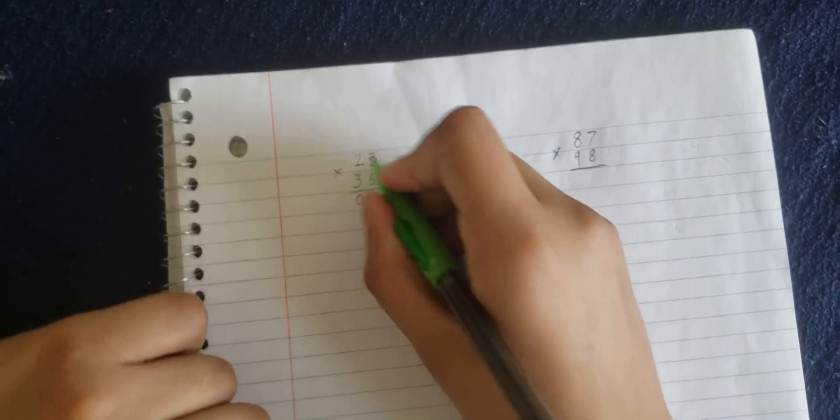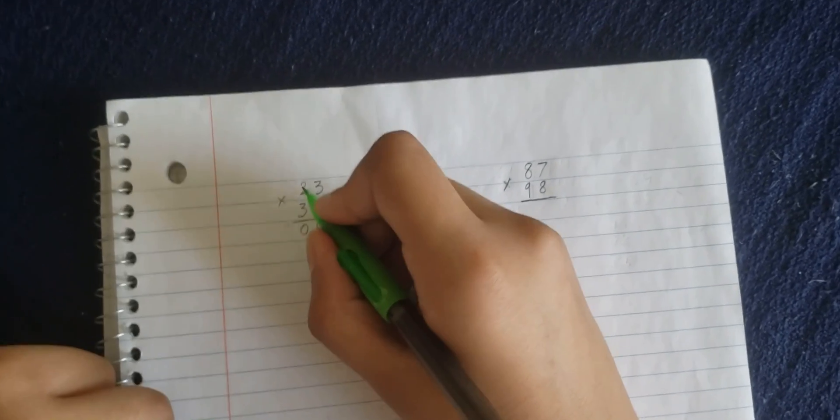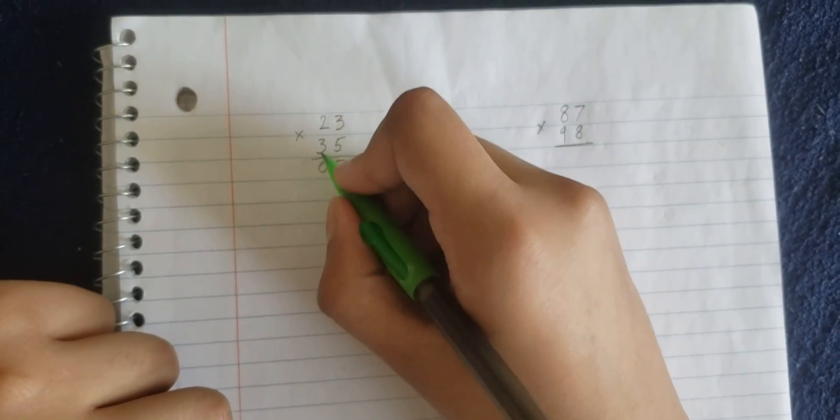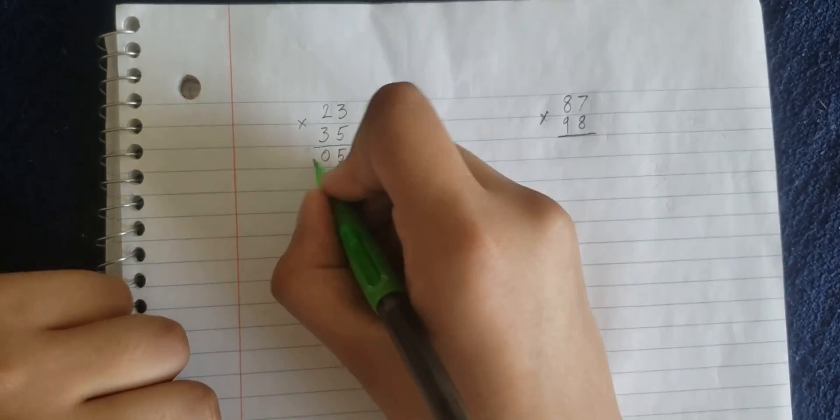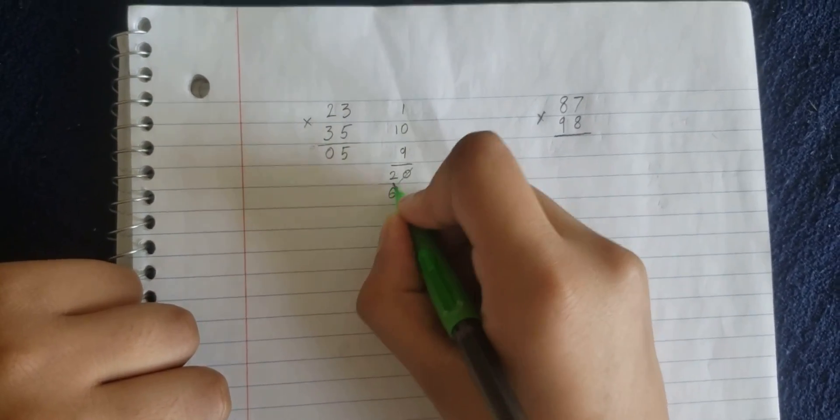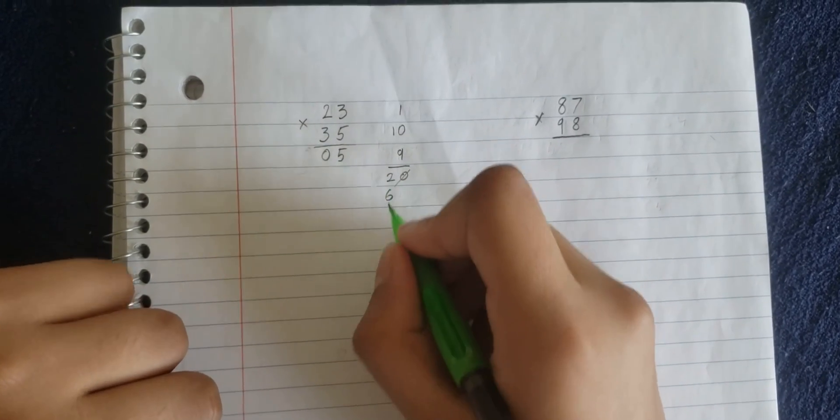Now, the next step, because we cross multiplied, now the next step is to multiply the tens. Three times two, or two times three, whatever, three times two is 6, plus 2 is 8.